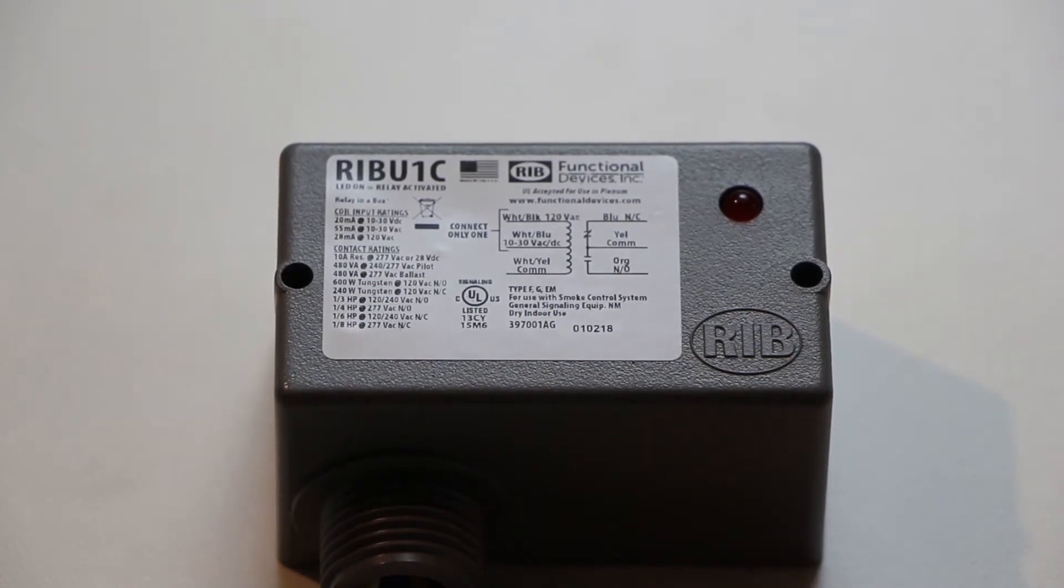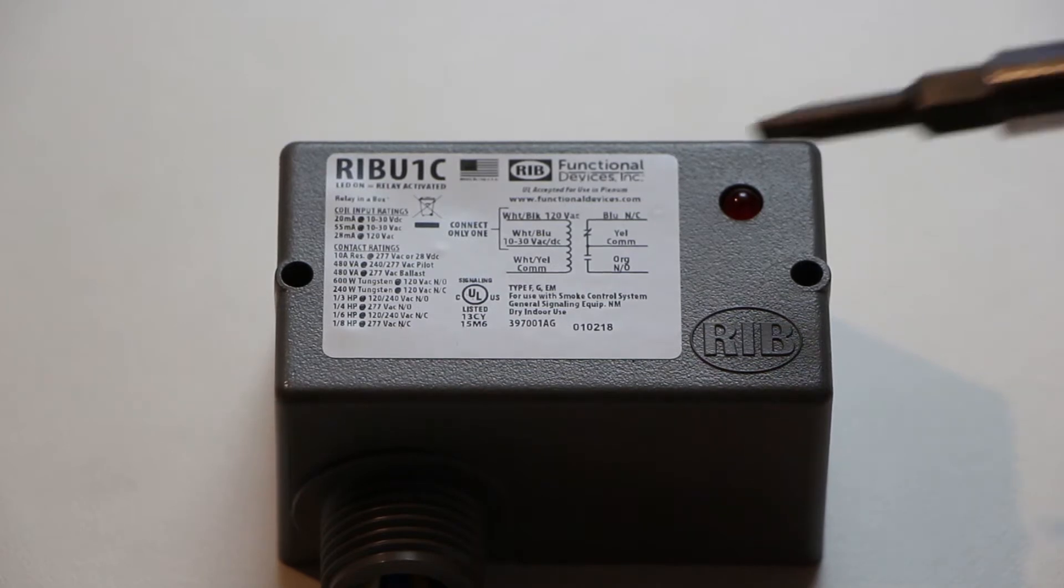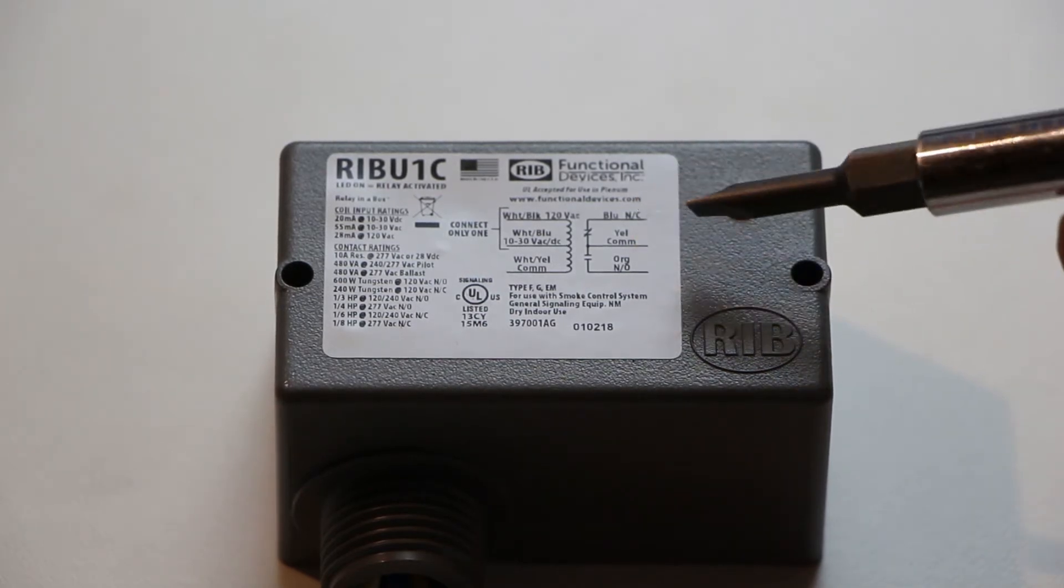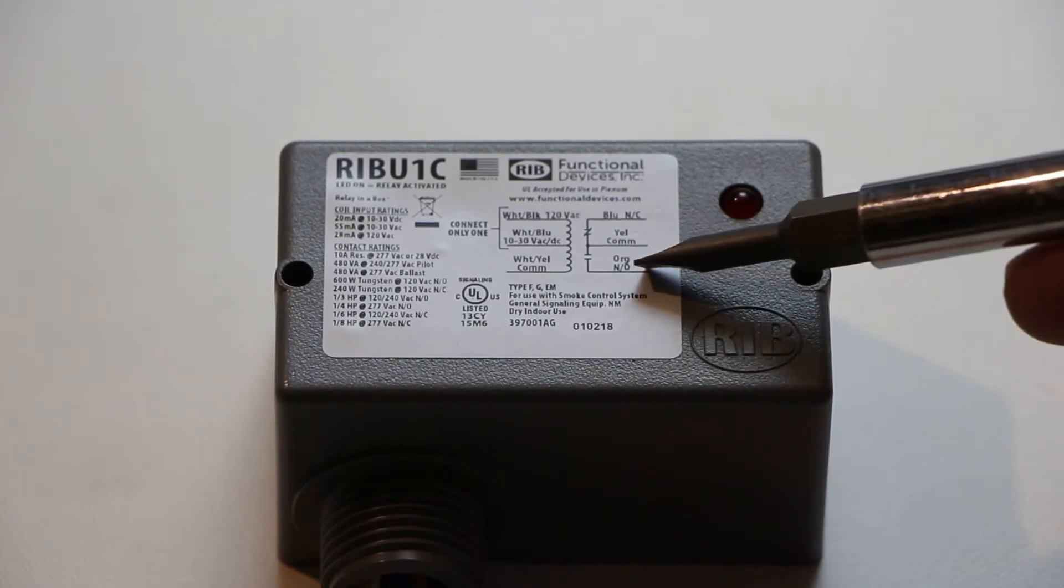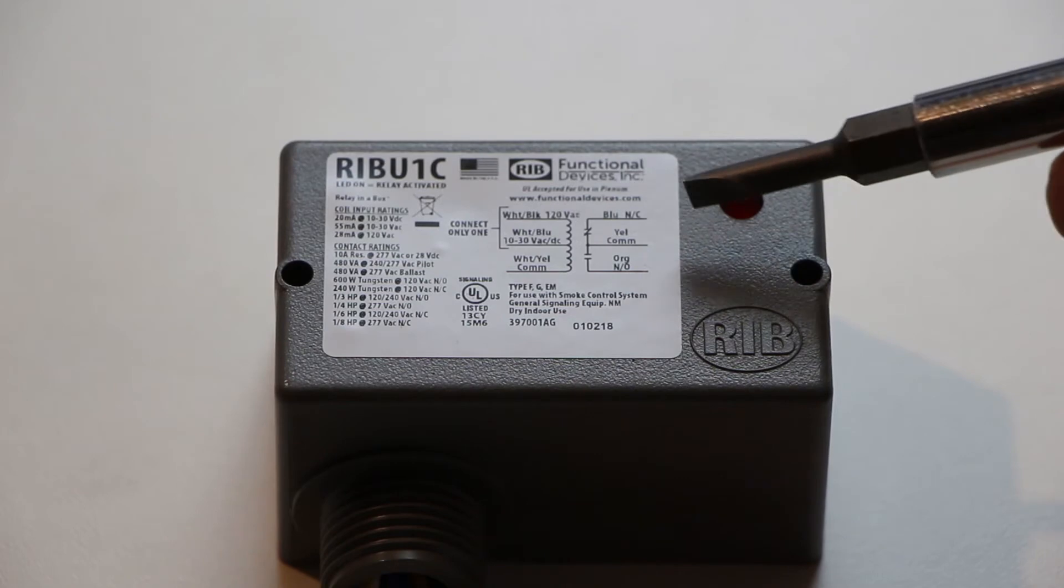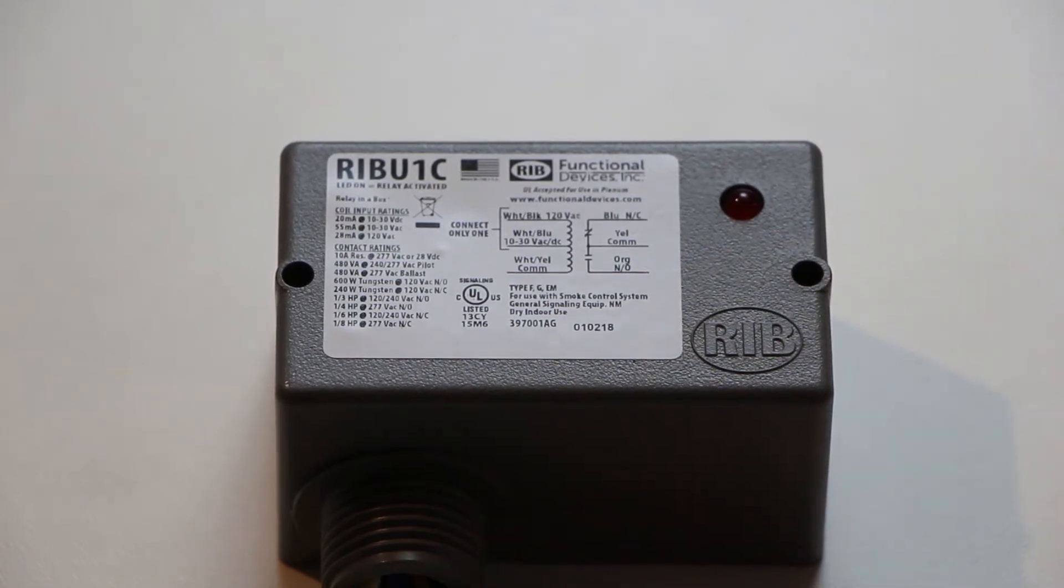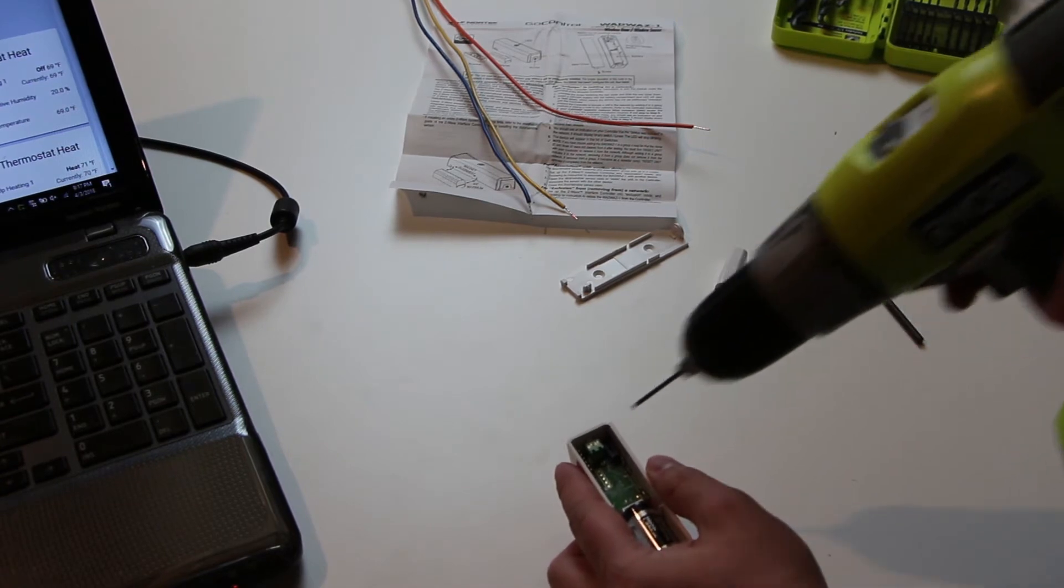So back to the manual sticker on top of this relay. What we need is a normally closed connection, and that's going to be blue, and yellow is a common. So we're going to leave the orange wire unhooked and connect both the blue and the yellow to the terminals inside the Z-Wave door sensor. I'm going to drill a couple holes to get the wires in to connect to these terminals.